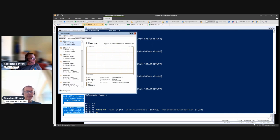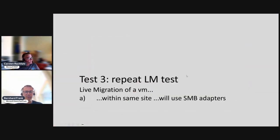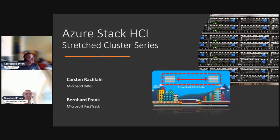Summary: if you live migrate a virtual machine within the same site, it will use the SMB adapters with RDMA. If you migrate from odd to even site or even to odd, it will use the cluster adapters — no longer the replication adapters. That's the conclusion of the routing video. Next, we'll look at the switching infrastructure.